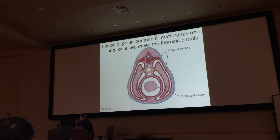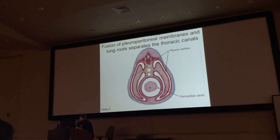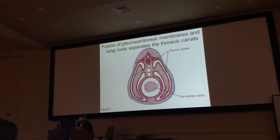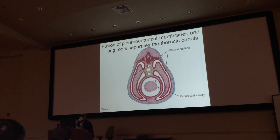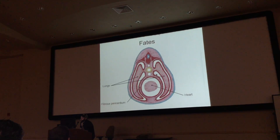On the left and right are your lungs. This is your fibrous pericardium; this is your heart itself. Here is your pericardial cavity, labeled pericardial cavity, and here are your thoracic cavities.